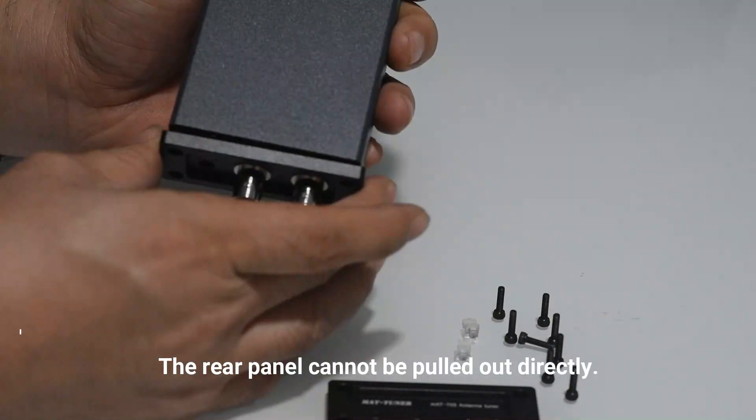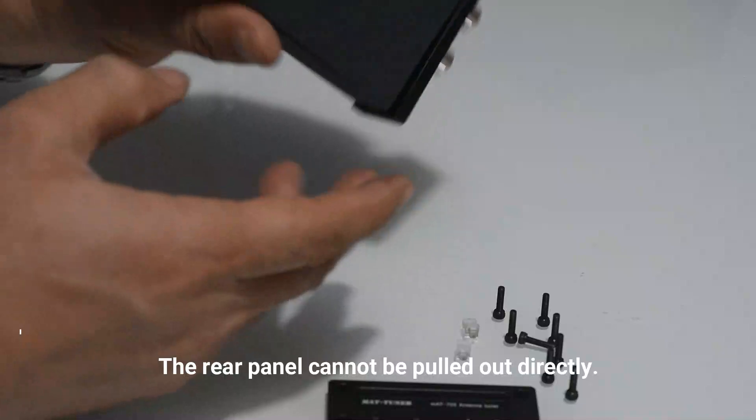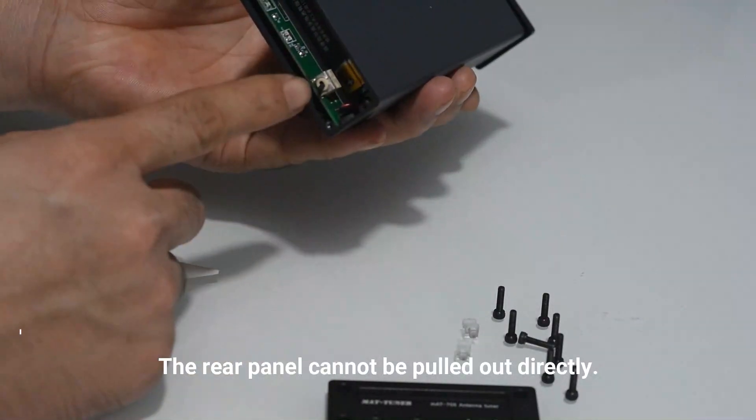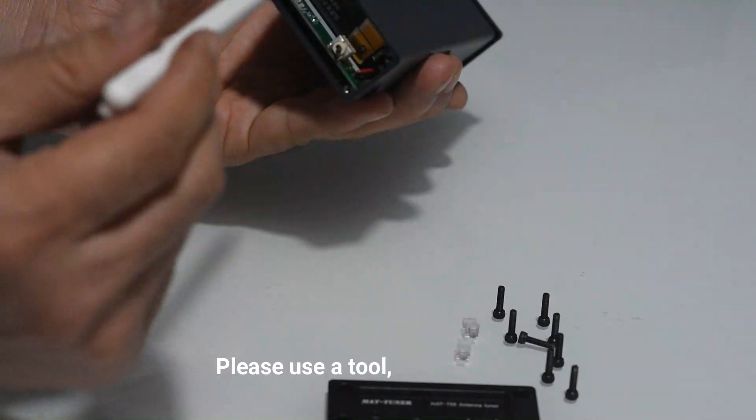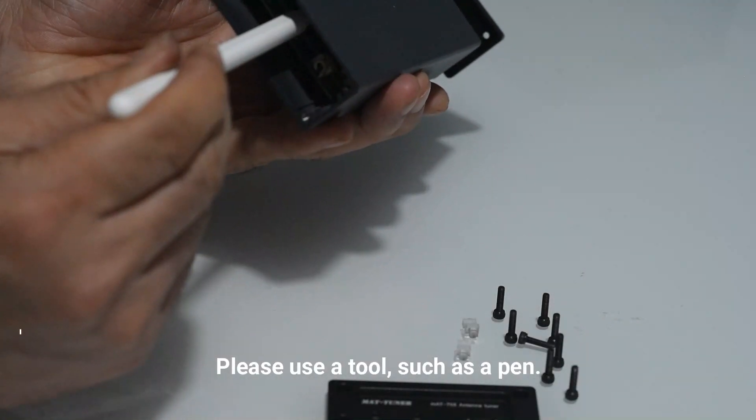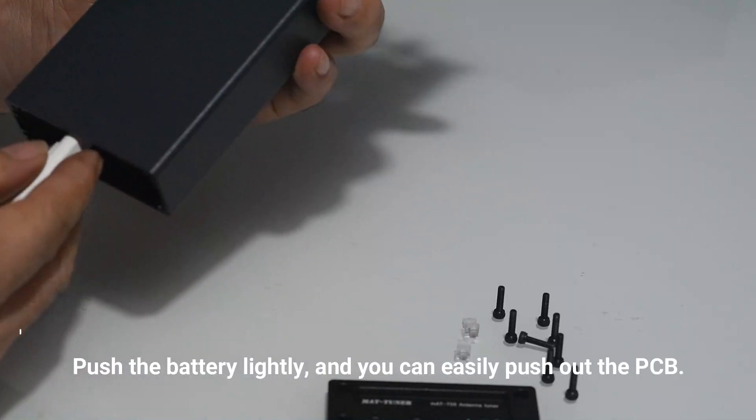Gently pull on the rear panel until the PCB moves slightly. Then simply push the PCB out against the battery with a long object.